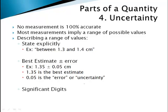Most of the values that we're given imply a range of possible values. There are many different ways to do this. The simplest is to simply state it explicitly. For instance, maybe I know that this particular length is between 1.3 and 1.4 centimeters, but I don't know it any more precisely than that.